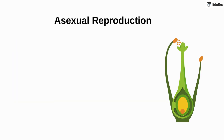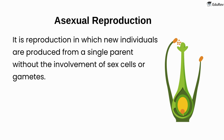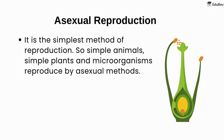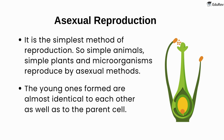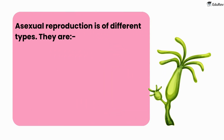First, we will discuss asexual reproduction. It is reproduction in which new individuals are produced from a single parent without the involvement of sex cells or gametes. In this, a part of the parent organism separates off and grows into a new organism. It is the simplest method of reproduction, so simple animals, simple plants, and microorganisms reproduce by asexual methods. The young ones formed are almost identical to each other as well as to the parent cell. Asexual reproduction generally occurs during favorable environmental conditions and when there is an abundance of food.